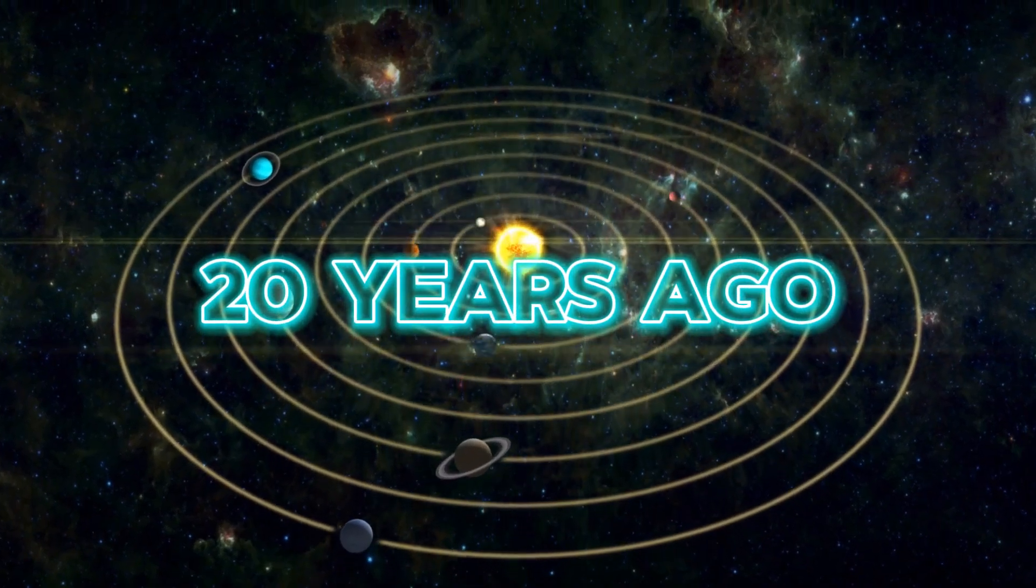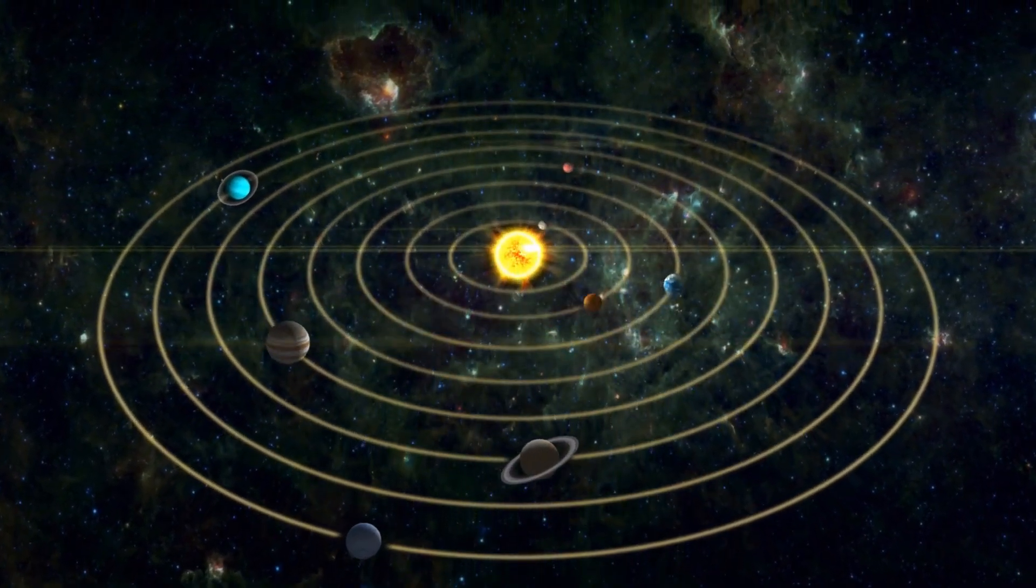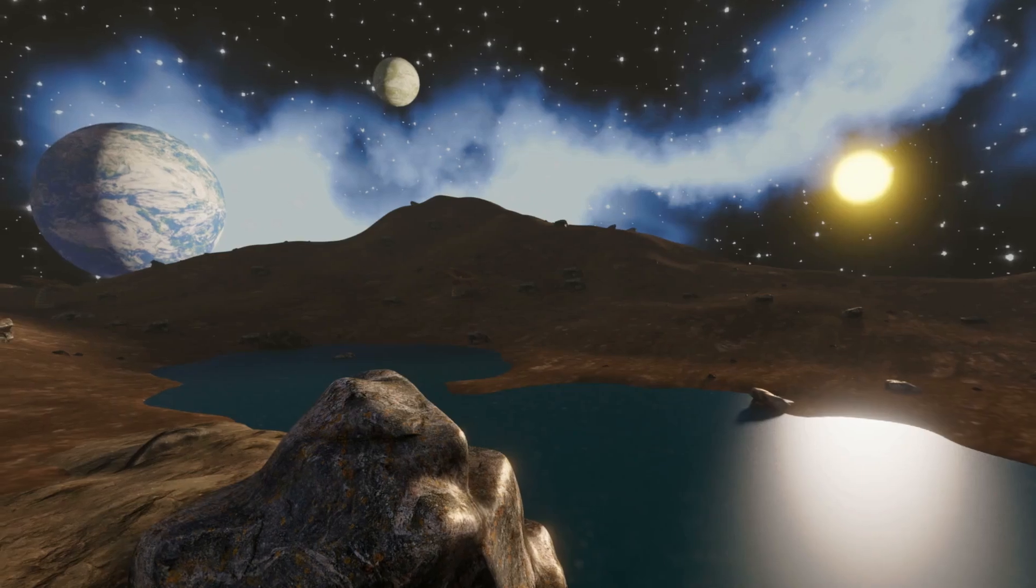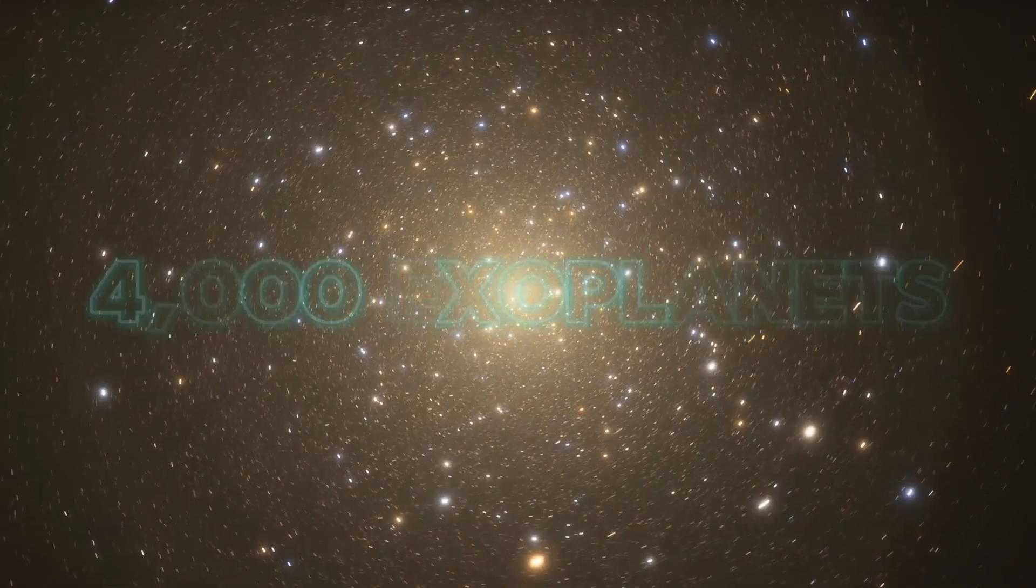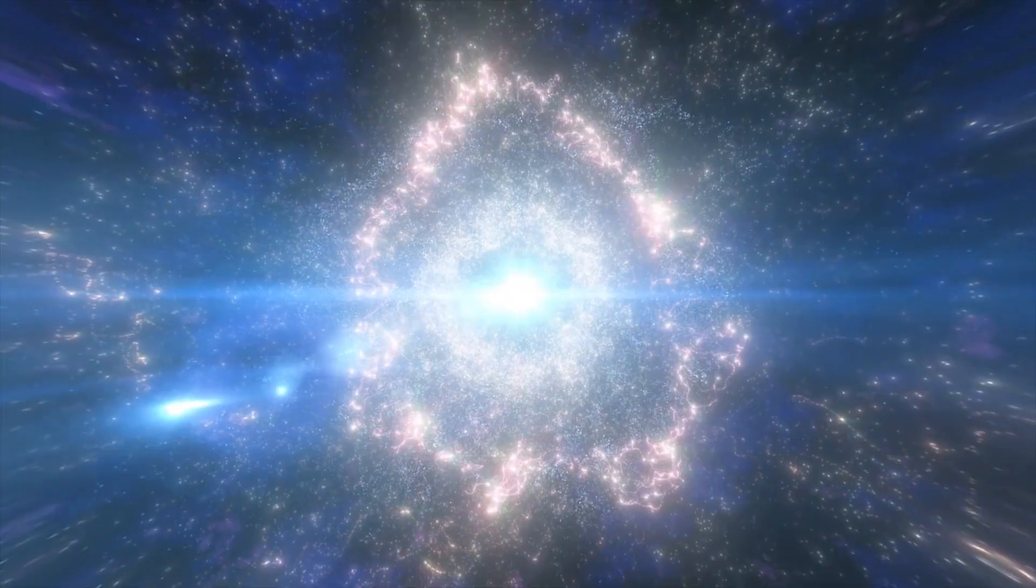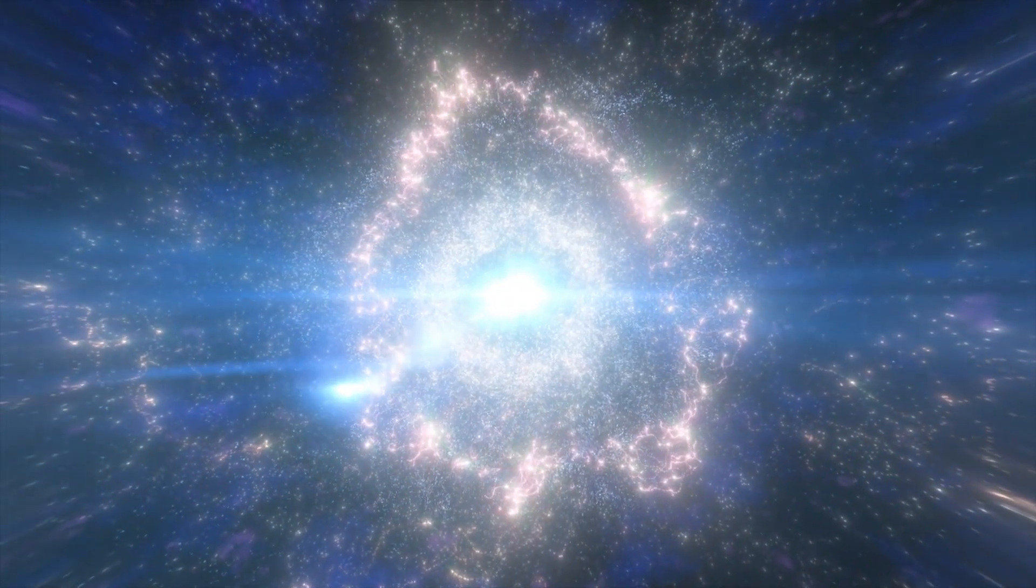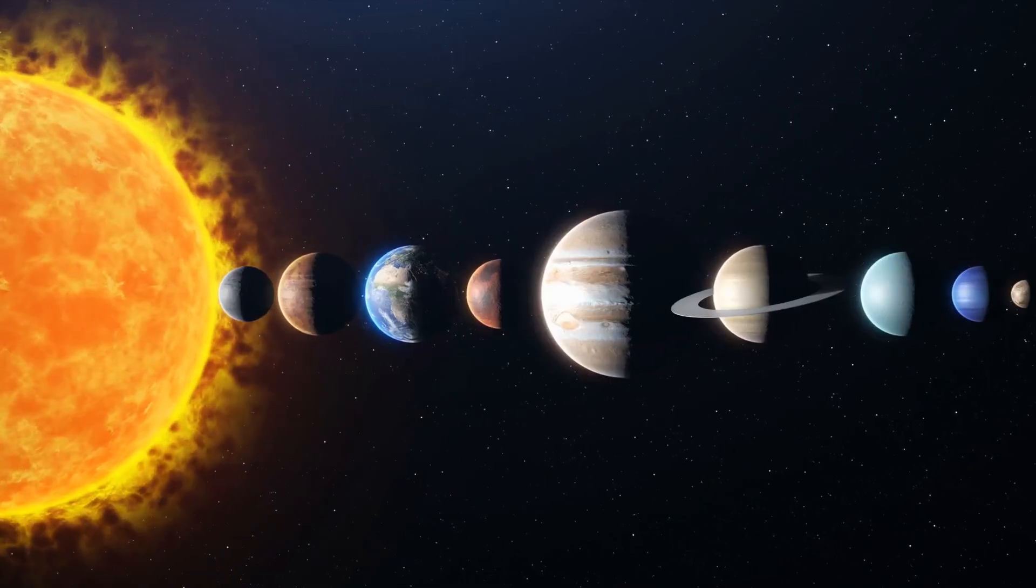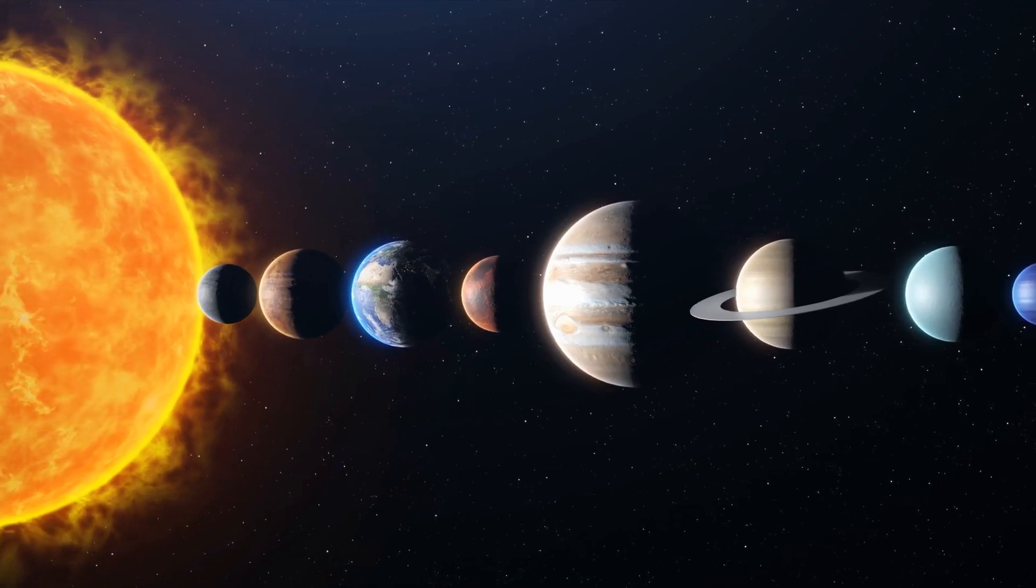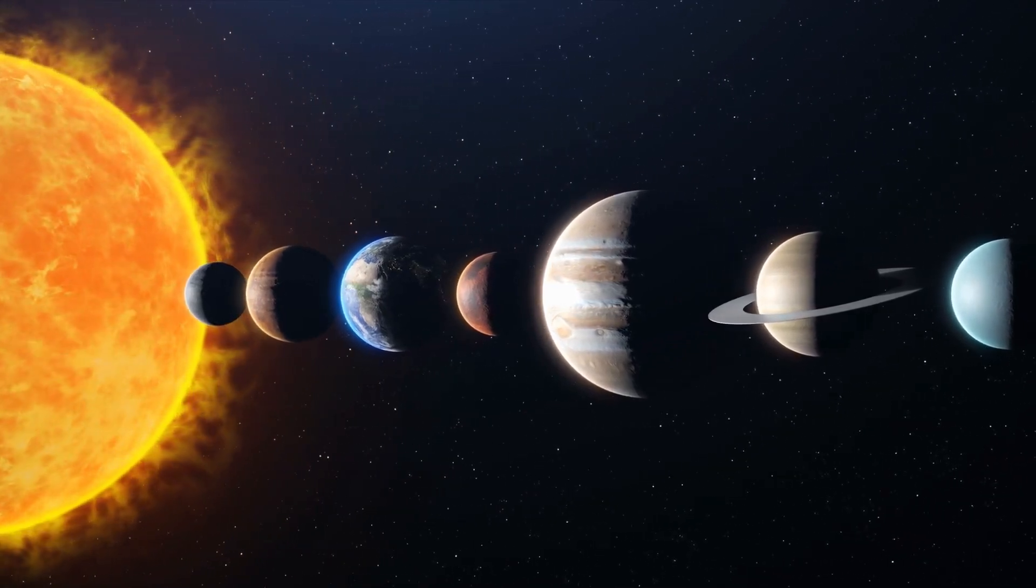Twenty years ago, there were no known planets outside those in our solar system. Since then, more than 4,000 exoplanets have been discovered orbiting other stars. NASA suggests there might be trillions of exoplanets out there in the universe. The first hints of life beyond our solar system could come from plants on these distant worlds.